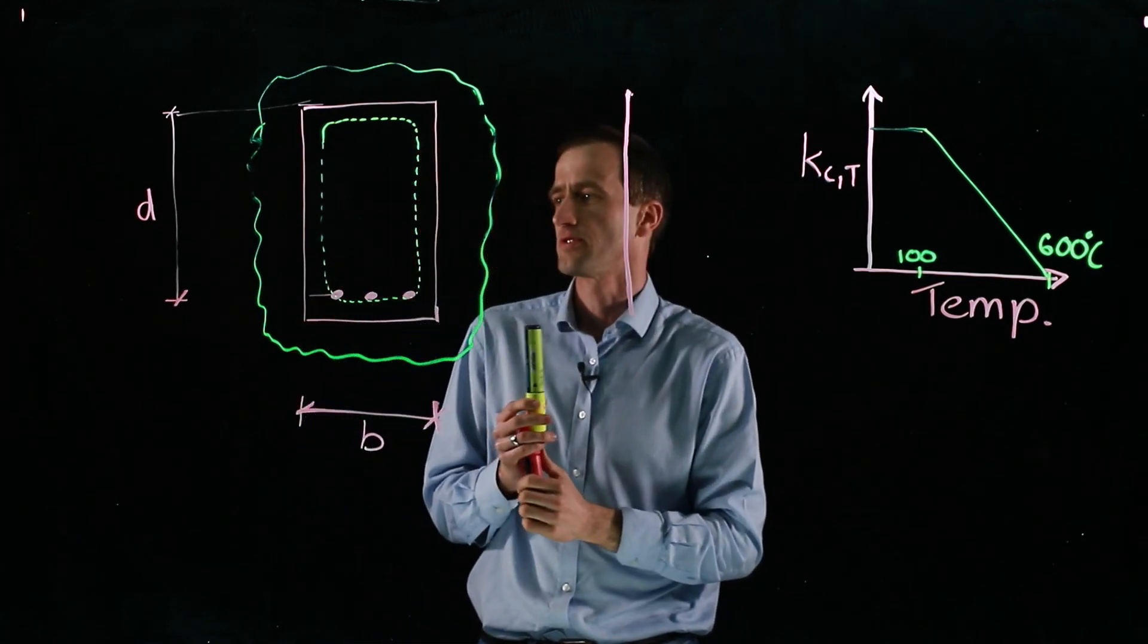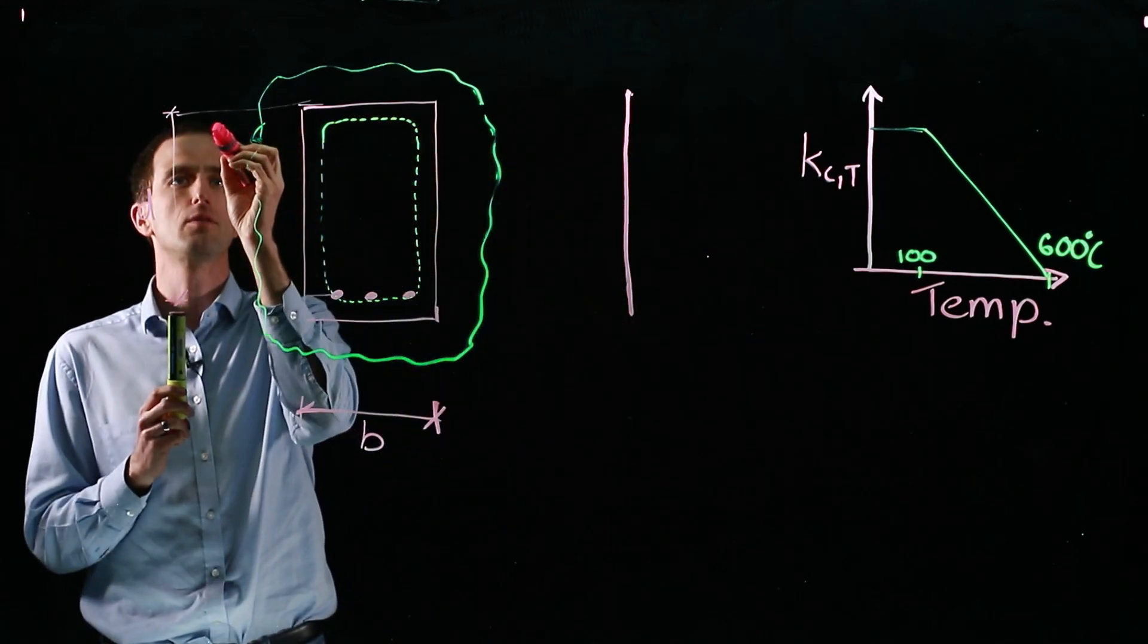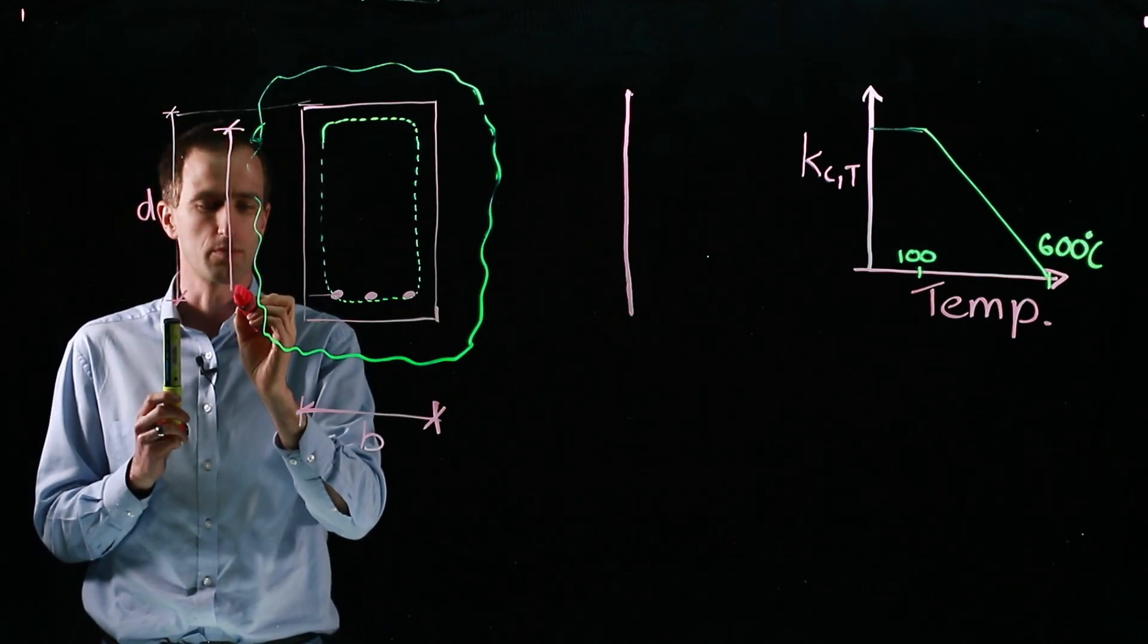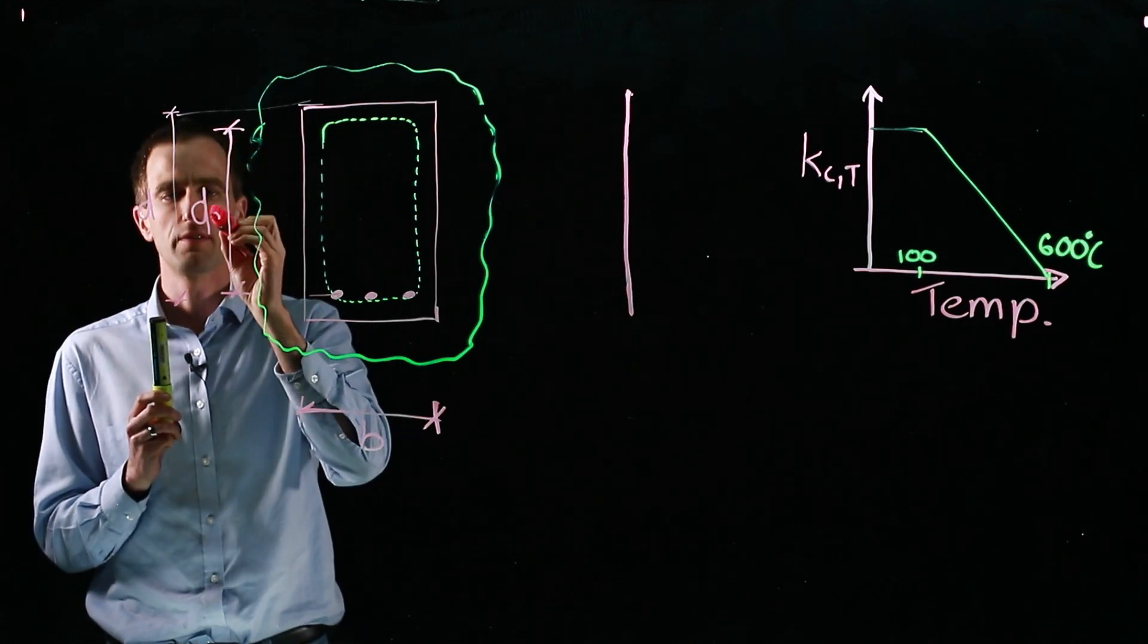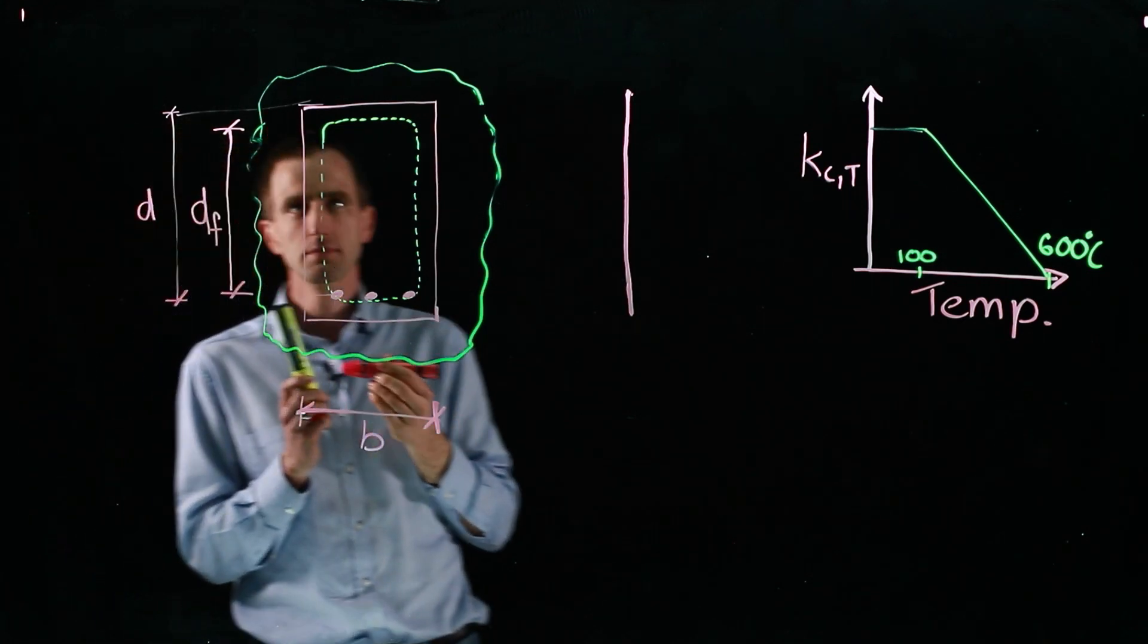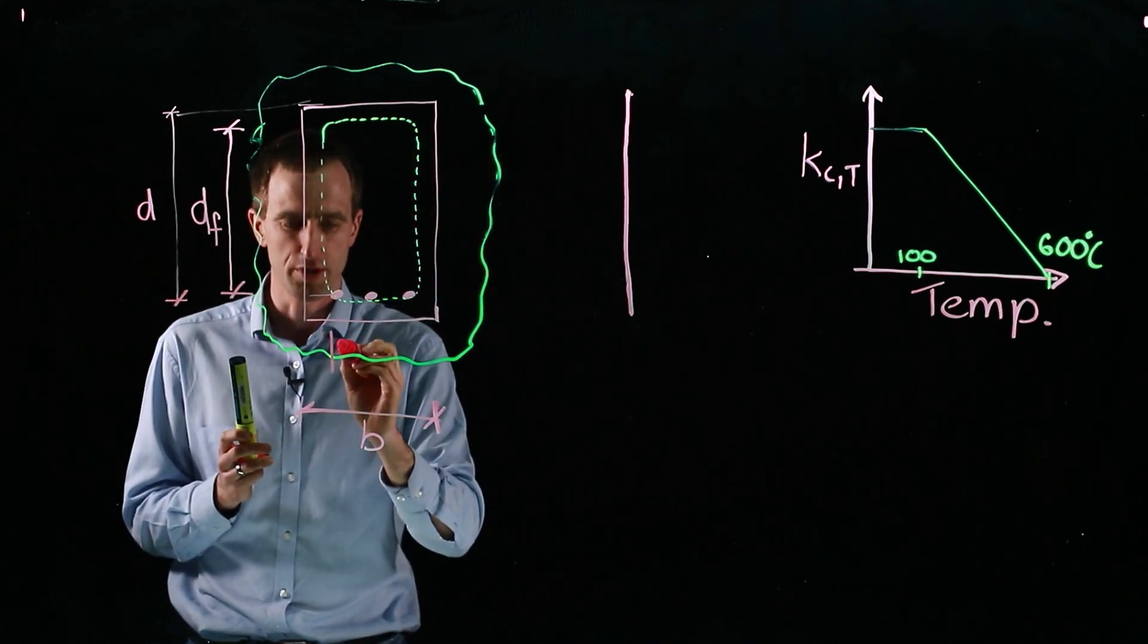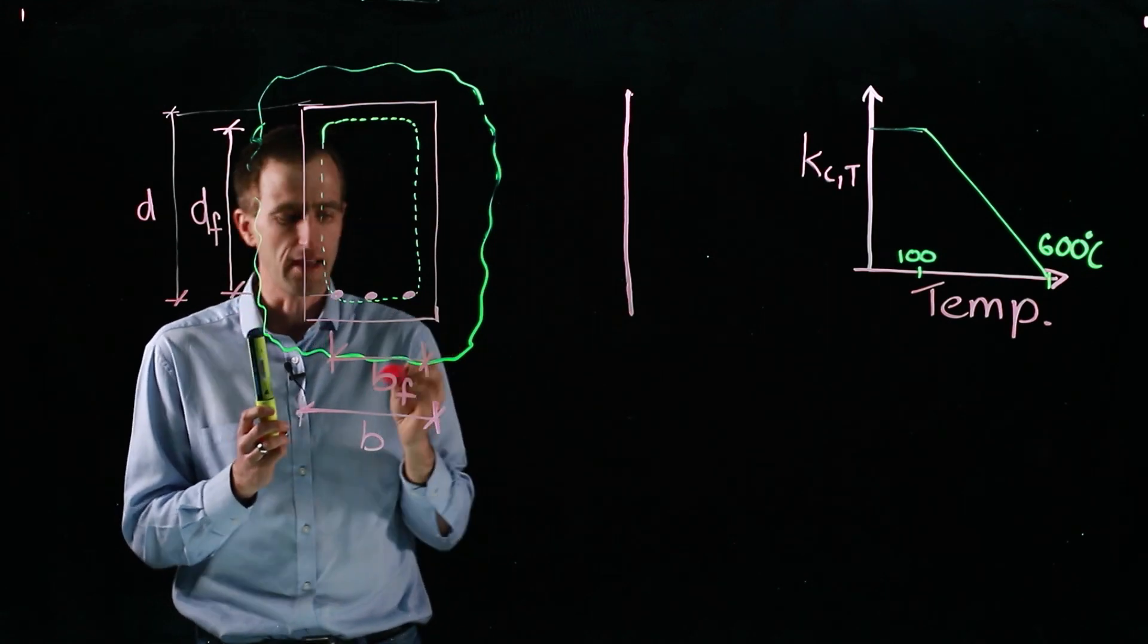And that way we can use a residual section to design it. But now that we've lost material on all sides, our effective depth from the top of the compression zone to the middle of our bars is reduced. We have a depth in fire DF, and also the effective breadth of our section reduces to BF.